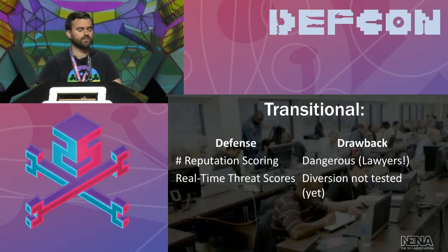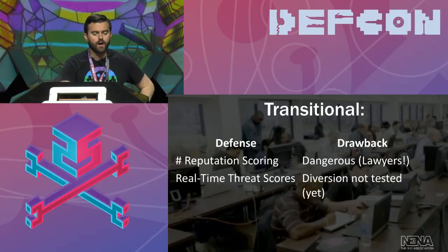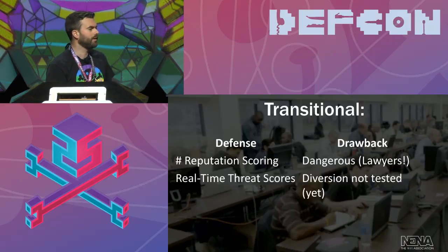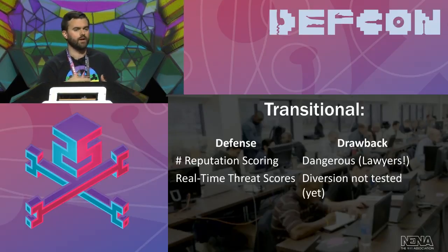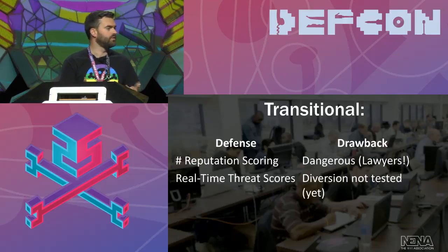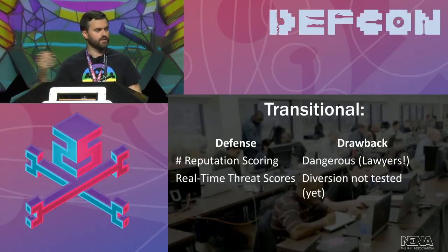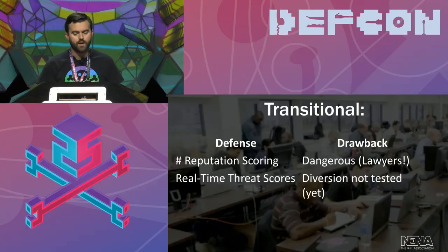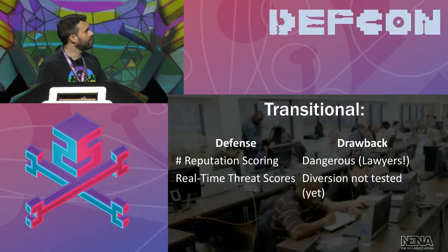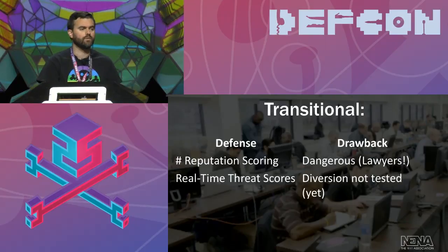In the transitional case, some things are being researched heavily right now. Homeland is doing a lot of work on this. You can do number reputation scoring. If you've got apps like Haya on your phone blocking bad calls, that's being done in part on the basis of number reputation scoring — we know this particular number is getting misused, so let's block or at least flag that call. That's dangerous because of lawyers, and also because of human life, so we've got to be careful about that.